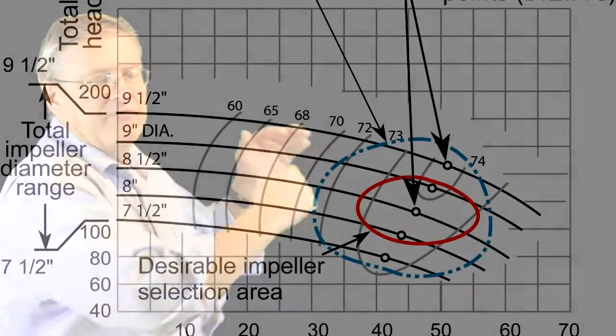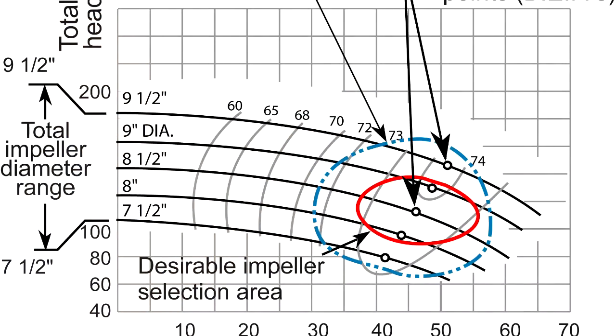For bigger industrial pumps we get curves that have a series of impeller sizes because you can order a pump with a smaller impeller or a bigger impeller depending on your operating conditions. But it's very similar to the curve I just showed you before and we still need to operate within that central region.